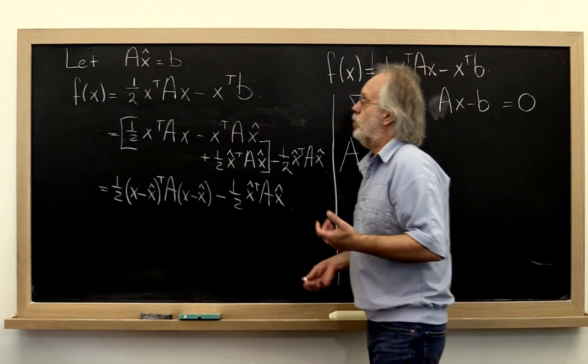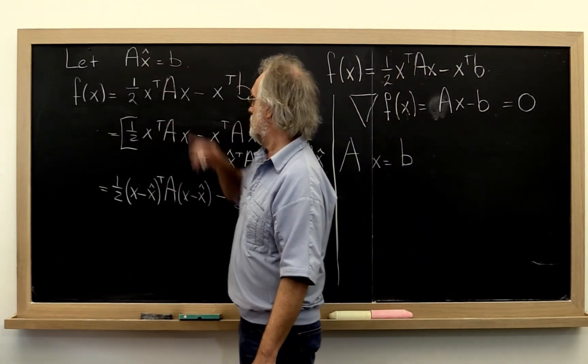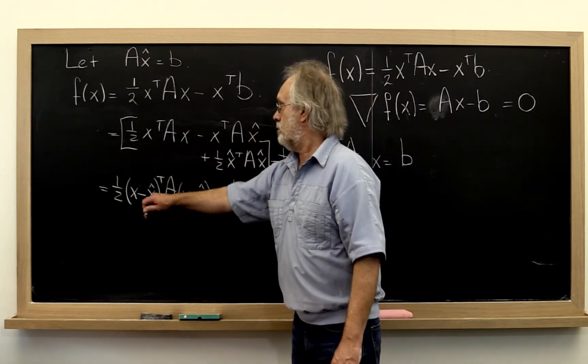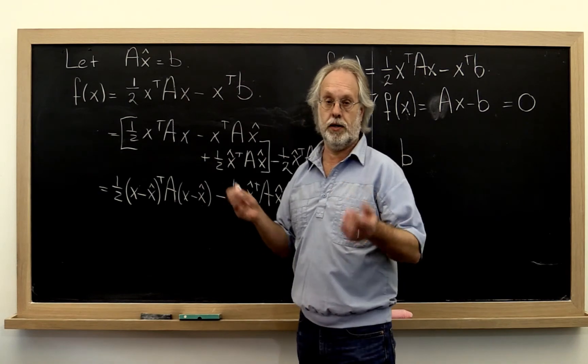And bingo! What we have shown is that if x-hat solves ax equals b, then it minimizes this function. Again, provided a is symmetric positive definite.